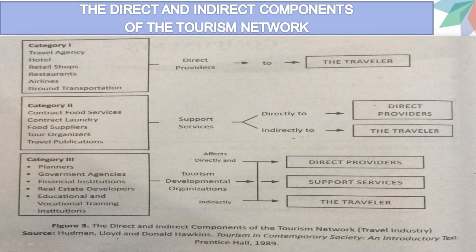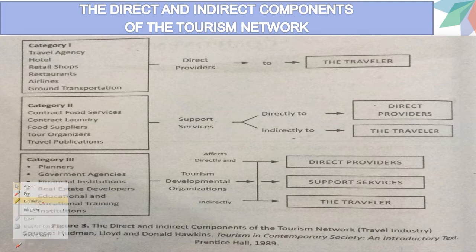There is a figure showing the direct and indirect components of the Tourism Network. Let us summarize the figure. It has different categories: Category 1, Category 2, and Category 3.